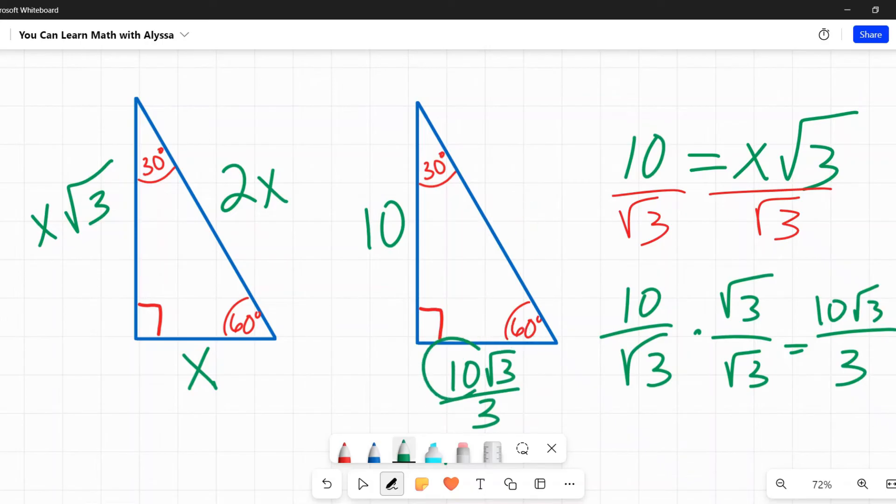To get the final hypotenuse, I need to multiply this by 2, which really just means multiplying that top left number there by 2, so 20 square root of 3 over 3. And again, double check always that these are not able to be simplified any further.